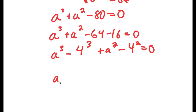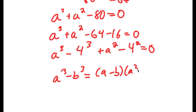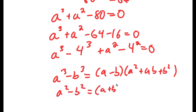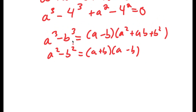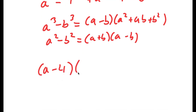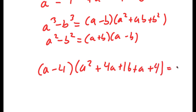Now, if I have something in the form a to the power of 3 minus b to the power of 3, this is going to equal a minus b times a squared plus ab plus b squared. And if I have something in the form a squared minus b squared, this is equal to a plus b times a minus b. So by using these two properties, I'm going to end up with a minus 4 times a squared plus 4a plus 16 plus a plus 4 is equal to 0.